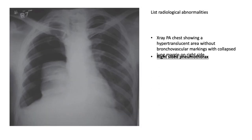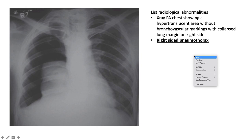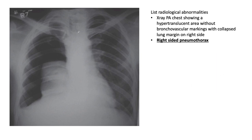This PA view shows a hyper-translucent area without bronchovascular markings, with a collapsed lung margin on the right side — the right-sided lung appears as a whitish opacified area. This is a right-sided pneumothorax.